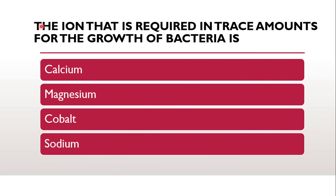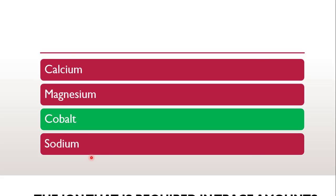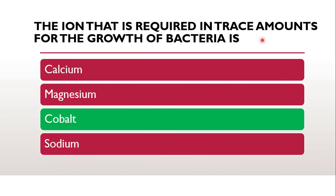Next question: the element required in trace amount for the growth of bacteria is whether it is calcium, magnesium, cobalt, or sodium. The correct answer is cobalt. Cobalt is required in trace amount for the growth of bacteria; it is a trace element required to carry out various metabolic processes. In case of excess cobalt, bacteria have their own mechanism to remove the excess quantities via the efflux system.